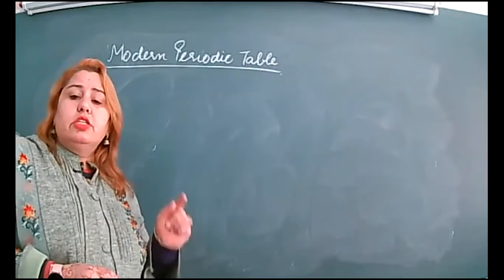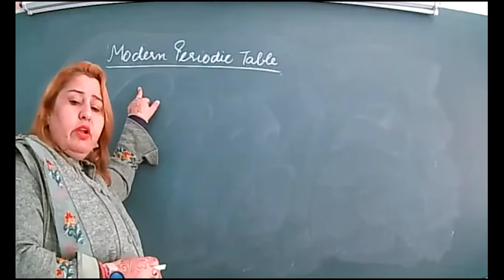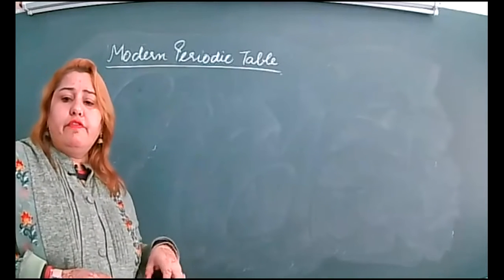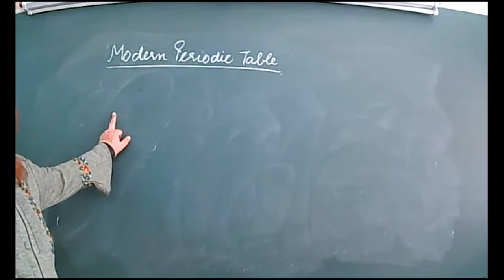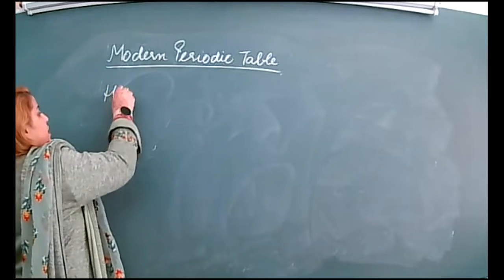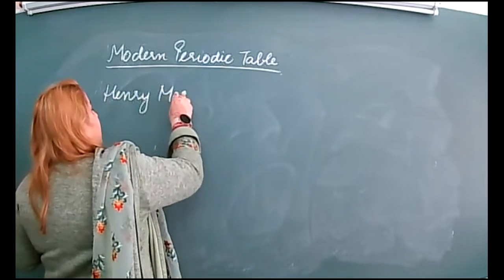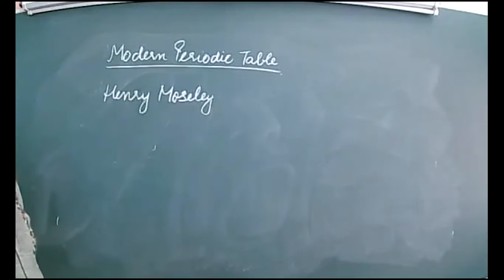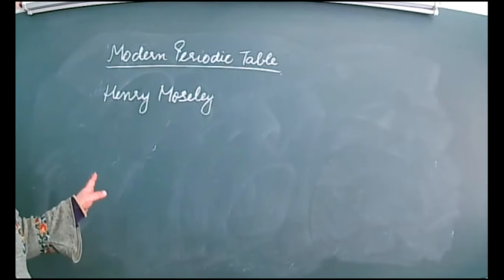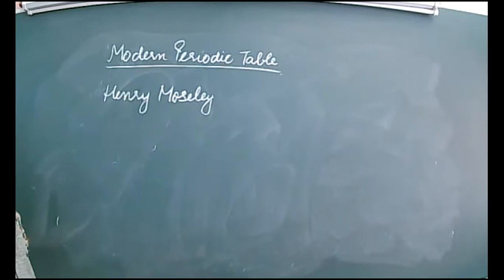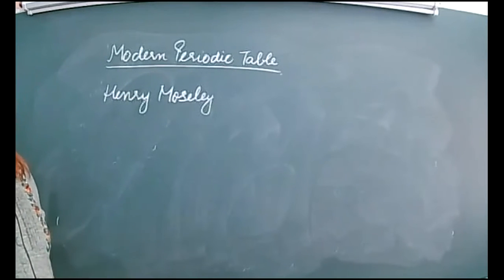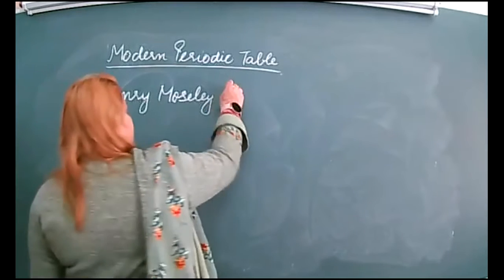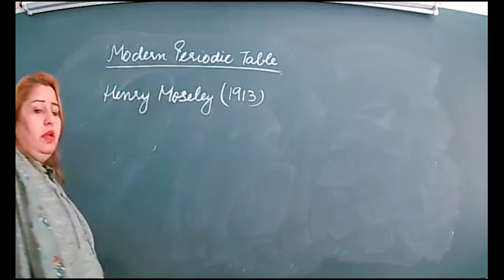All the previous classifications were based on increasing atomic masses. The modern periodic table, or present basis of the classification of elements, is based on increasing atomic number. This was given by Henry Moseley in 1913.